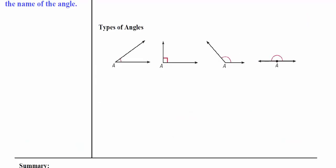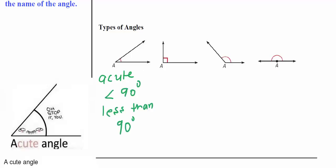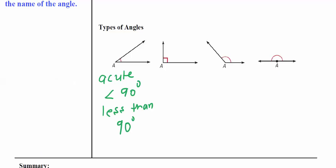Here are some types of angles you're going to encounter. This is an acute angle. Acute angles are less than 90 degrees - anything bigger than zero and smaller than 90.